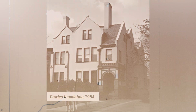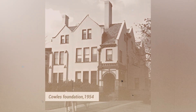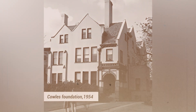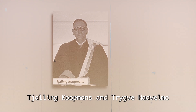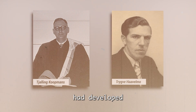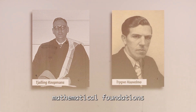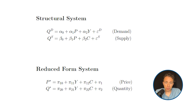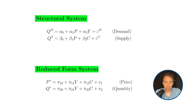Our story begins in the 1950s at the Cowles Foundation. Here, giants like Tjalling Koopmans and Trygve Haavelmo had developed the mathematical foundations of econometrics. Broadly speaking, these were divided into two types of equations: structural equations and reduced form equations.